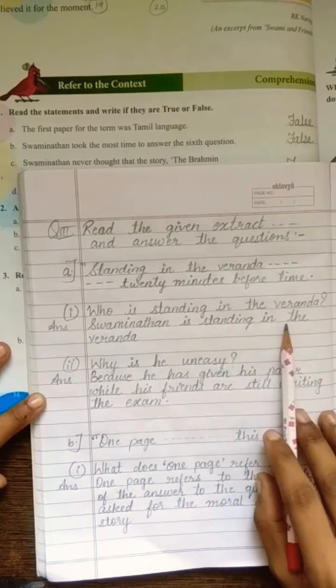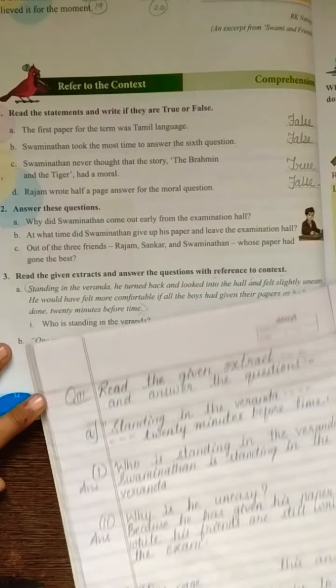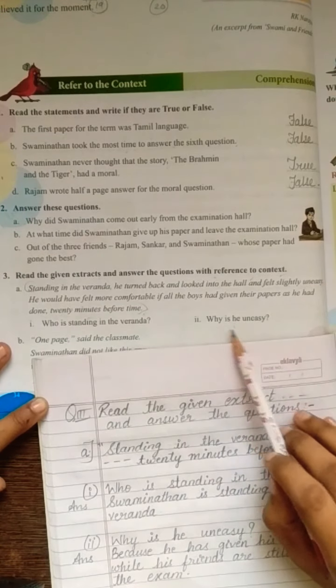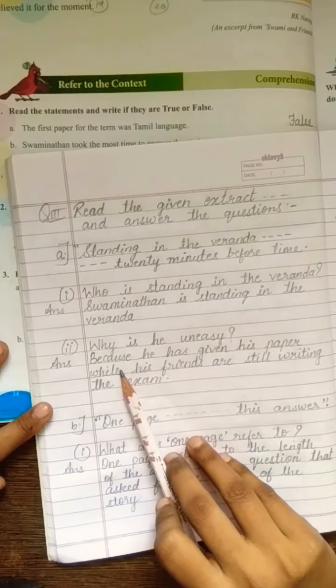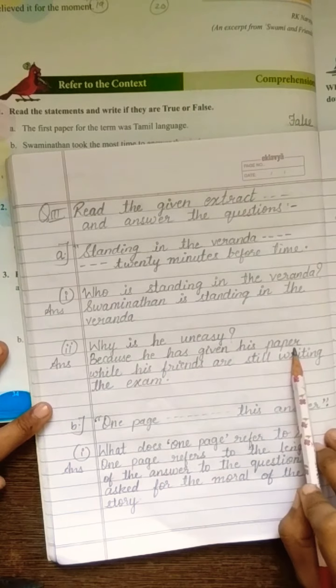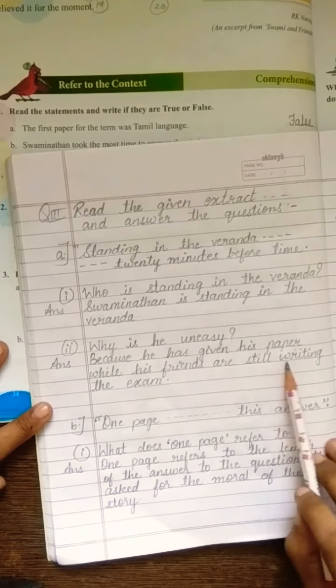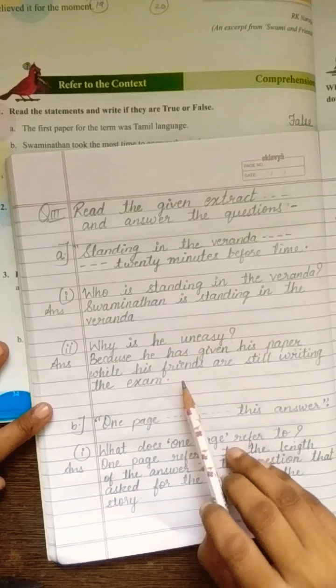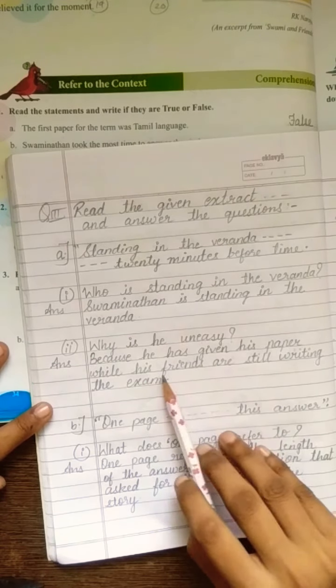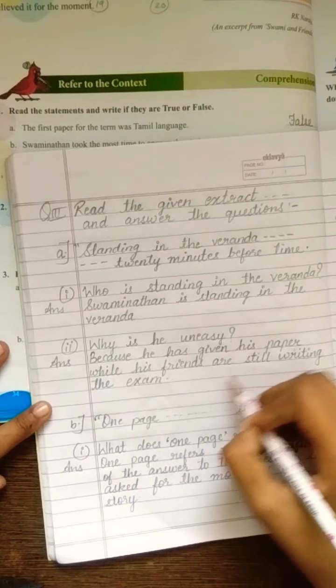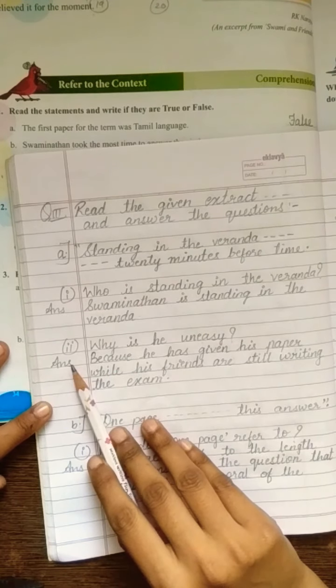Now, the next question is, why is he uneasy? Swaminathan uneasy kyun feel kar raha tha? Answer. Because he has given his paper while his friends are still writing the exam. Why he was feeling uneasy, Swaminathan? Because he had given his paper. And uske baaki ke friends abhi bhi likha rahe the hai, right?